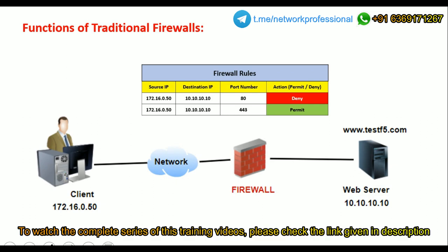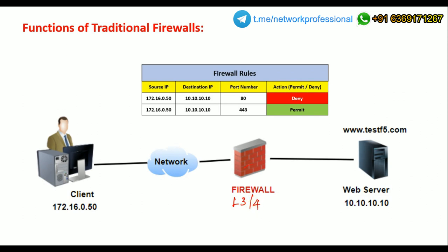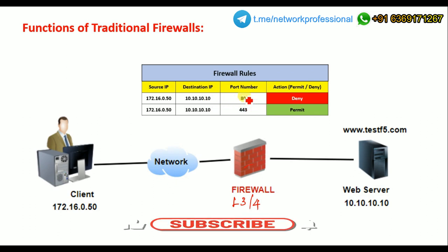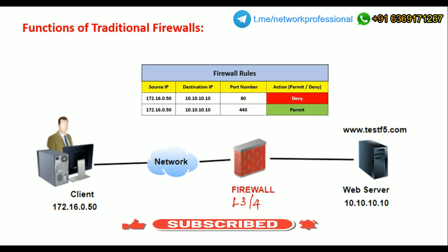When it comes to any infrastructure, we have a firewall in place to provide network security. This is a traditional firewall — nowadays we also have next-gen firewalls, but traditional firewalls are still common. They protect against network attacks and provide network security. A traditional firewall works on Layer 3 and Layer 4, and rules are set up to control traffic.